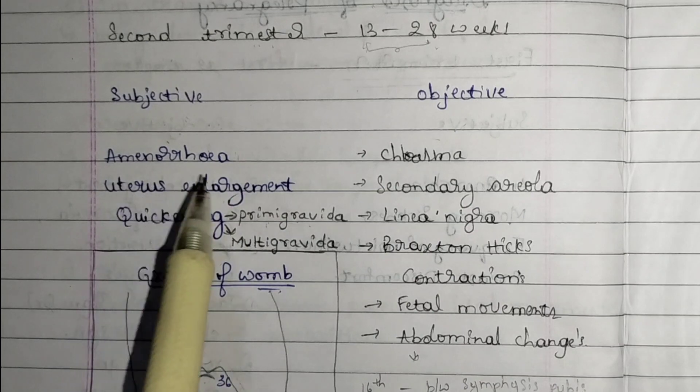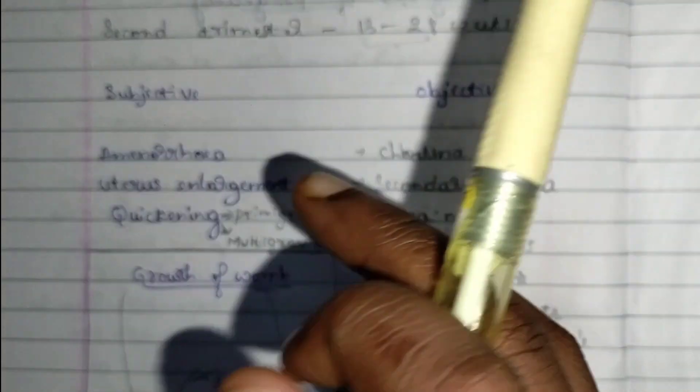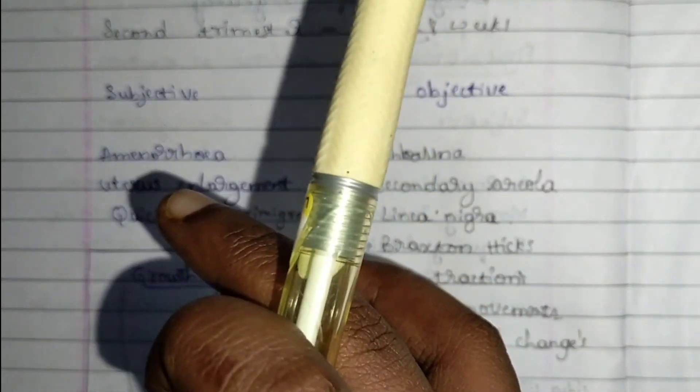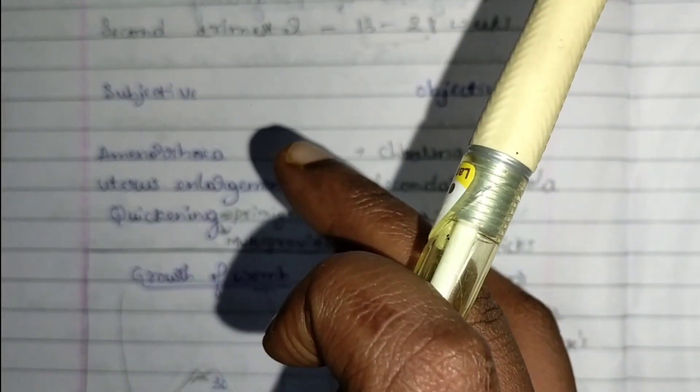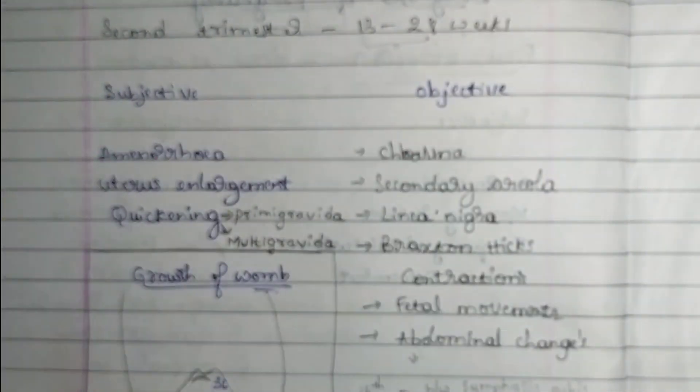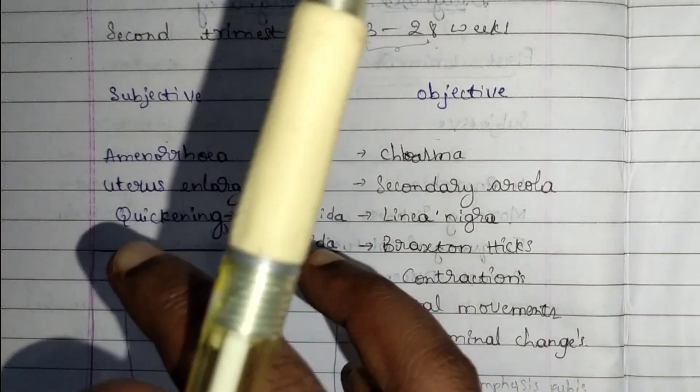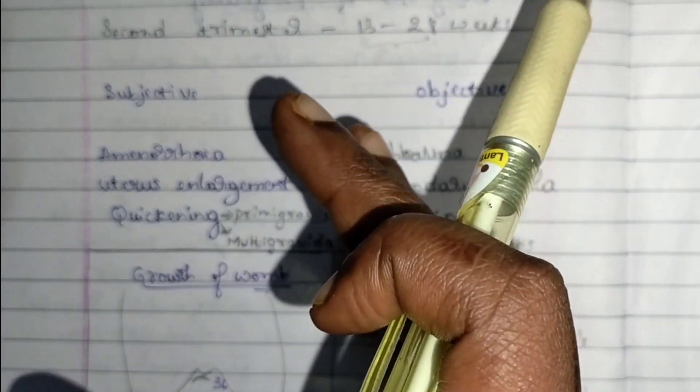Subjectively we can see three things: amenuria, uterus enlargement, and quickening. Amenuria is the absence of menstruation. Uterus enlargement is visibly seen from the third to sixth month. Quickening is the fetal activity.